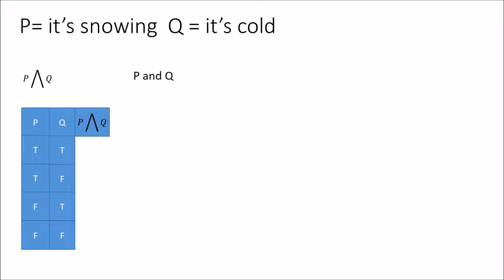For P AND Q, the first row is true because it's both snowing and cold — both are true. But in the next examples we only have one of them, and we want both to be true, so those statements are going to be false. Likewise, on the very last row they're both false, so the proposition itself is also false.